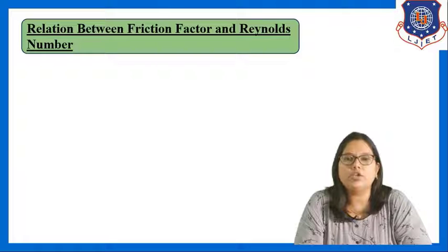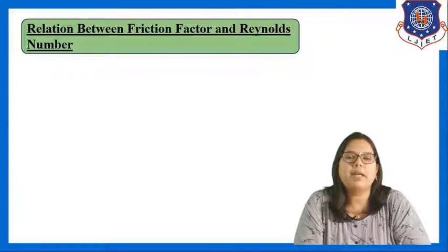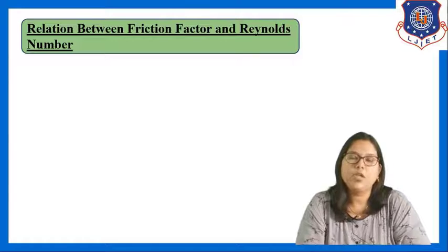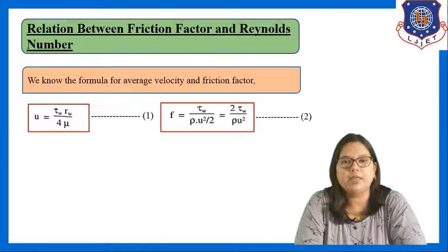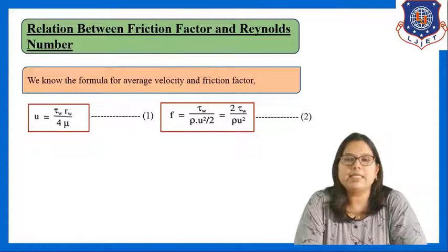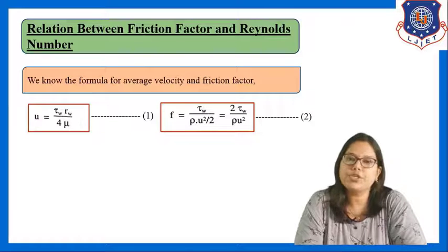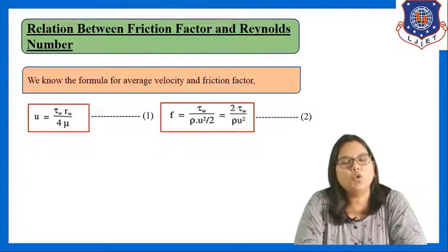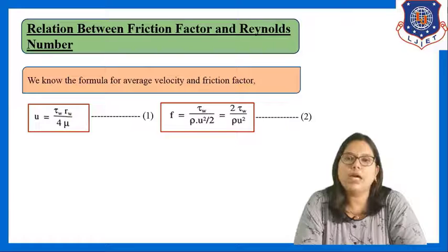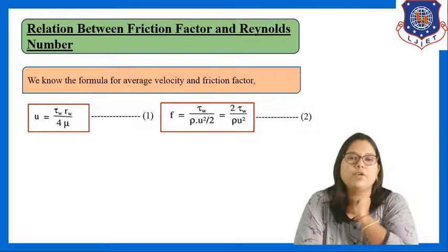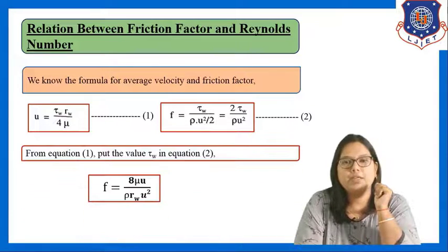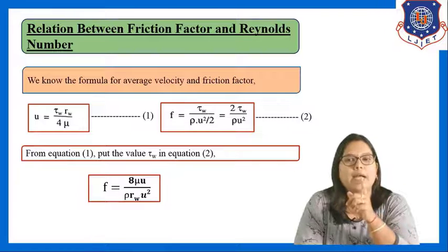Now we shift to another topic: the relation between friction factor and Reynolds number in the case of laminar flow. To derive this, we use two equations — average velocity and friction factor. Average velocity: ū = τ_w · r_w / (4μ) (equation 1). Friction factor: f = τ_w / (ρū²/2) = 2τ_w / (ρū²) (equation 2). From equation 1, we substitute the value of τ_w into equation 2.